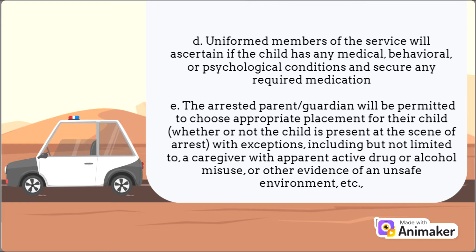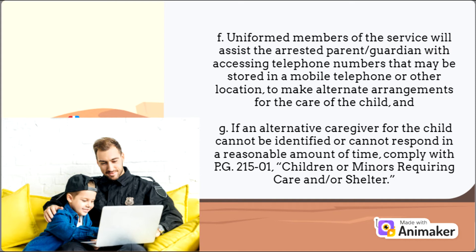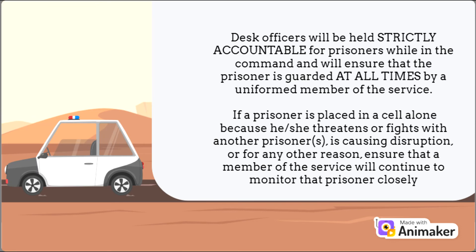The arrested parent or guardian will be permitted to choose appropriate placement for their child, whether or not the child is present at the scene of arrest, with exceptions including but not limited to a caregiver with active drug or alcohol misuse or other evidence of an unsafe environment. Uniformed members of the service will assist the arrested parent or guardian with accessing telephone numbers stored in a mobile telephone or other location to make alternate arrangements for the care of the child. If an alternative caregiver cannot be identified or cannot respond in a reasonable amount of time, comply with PG 200-15-01, Children or Minors Requiring Care and/or Shelter.